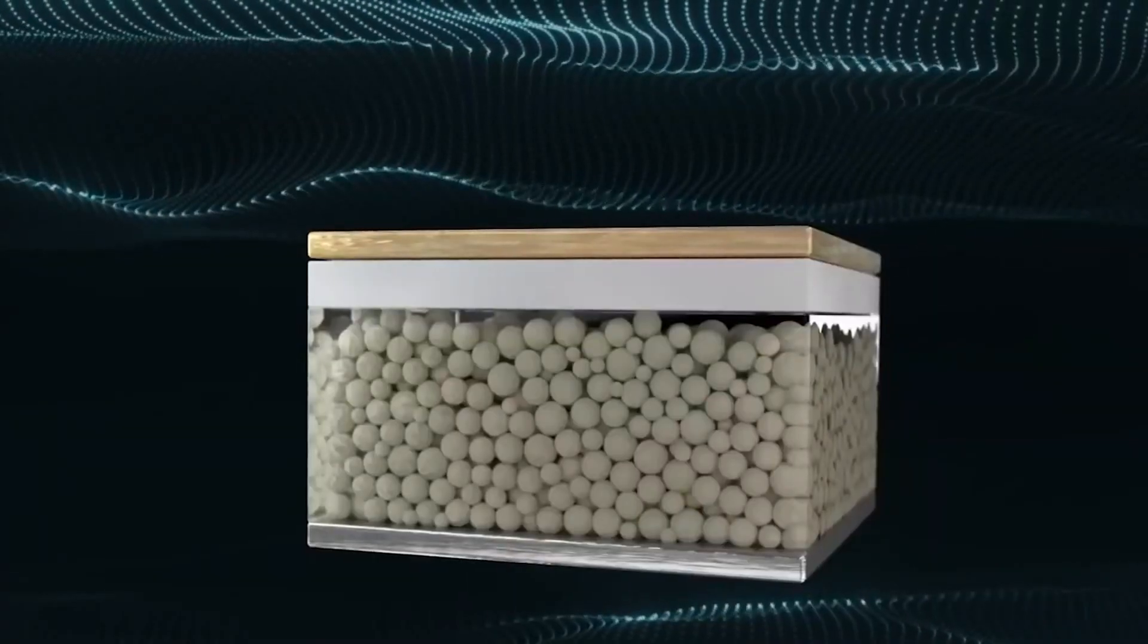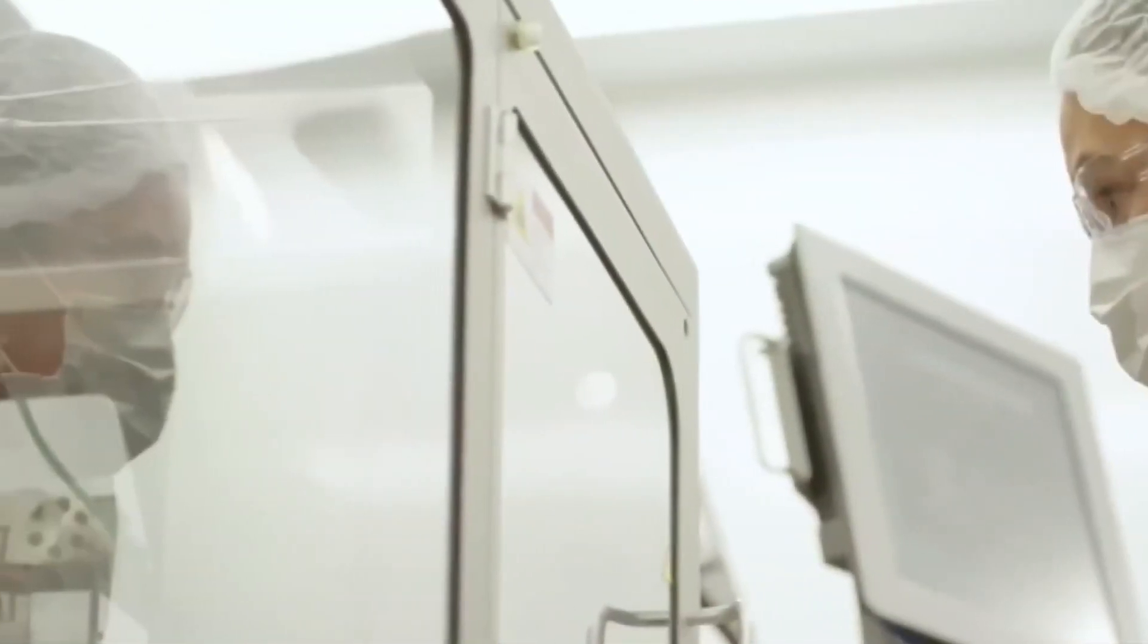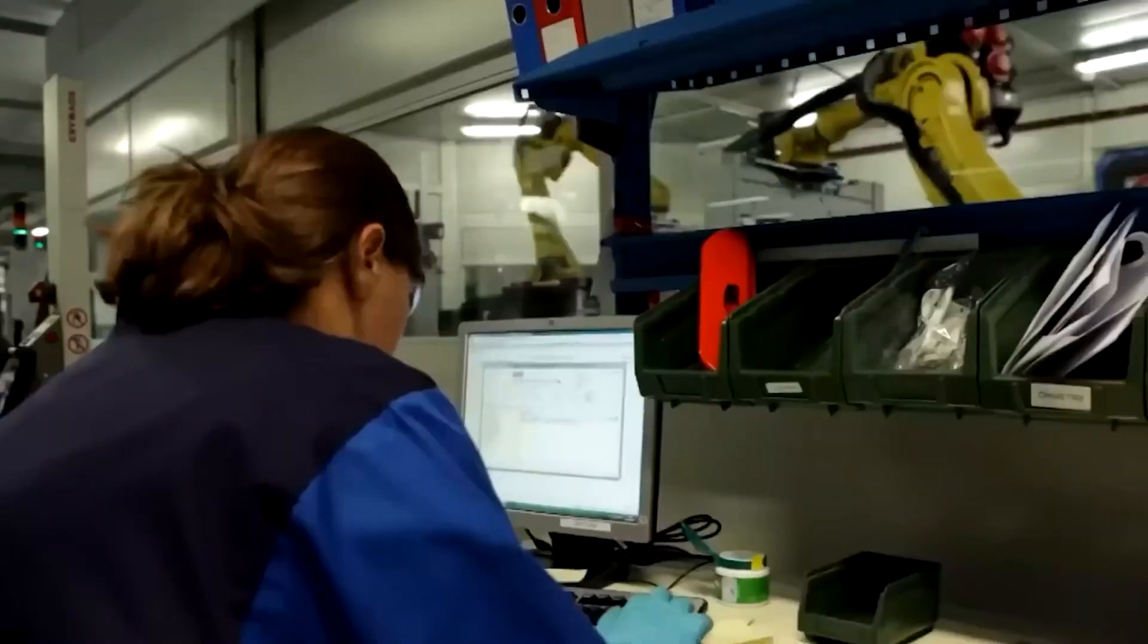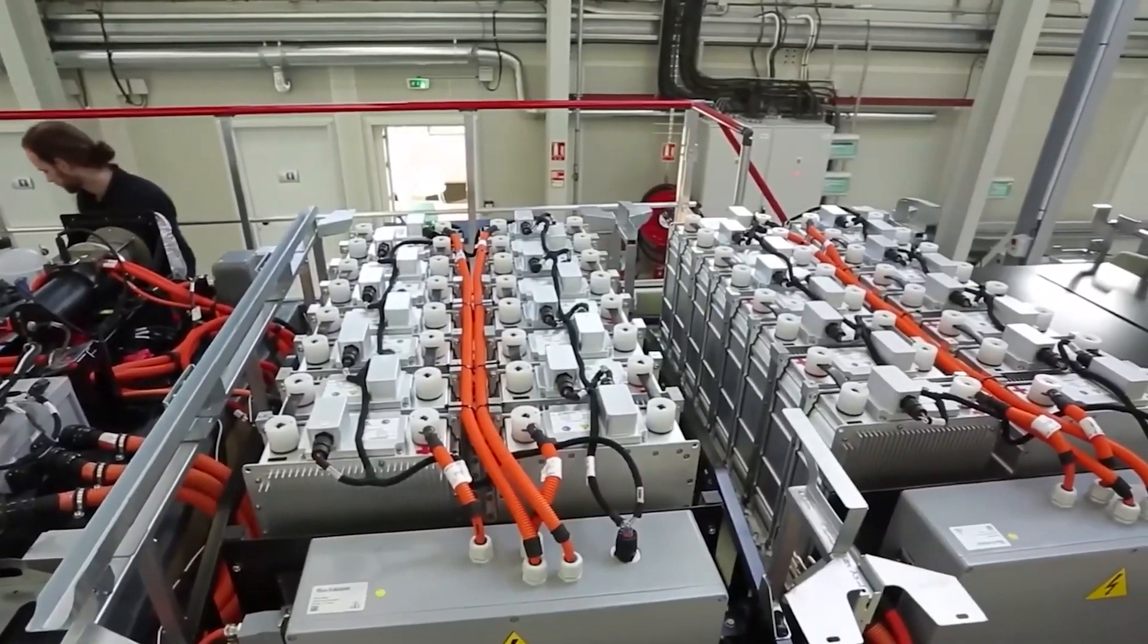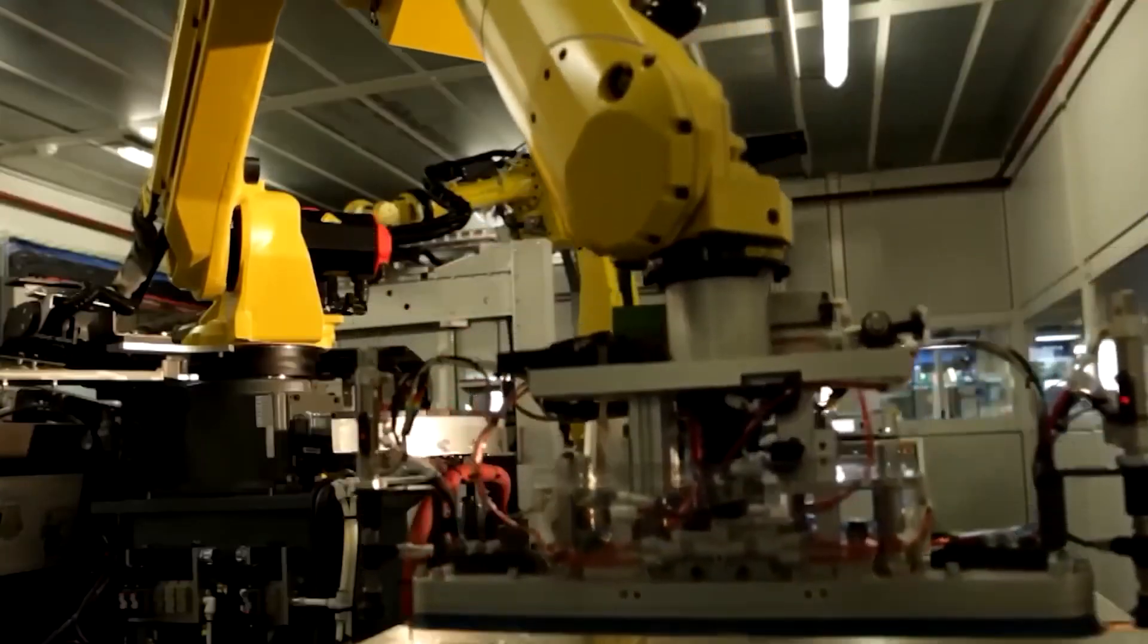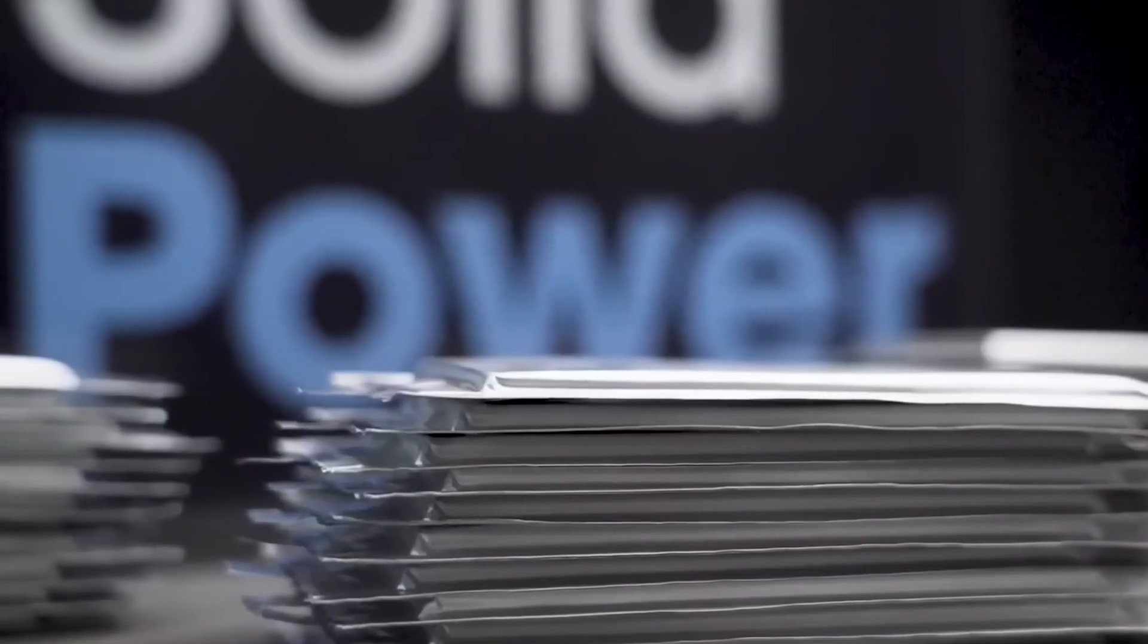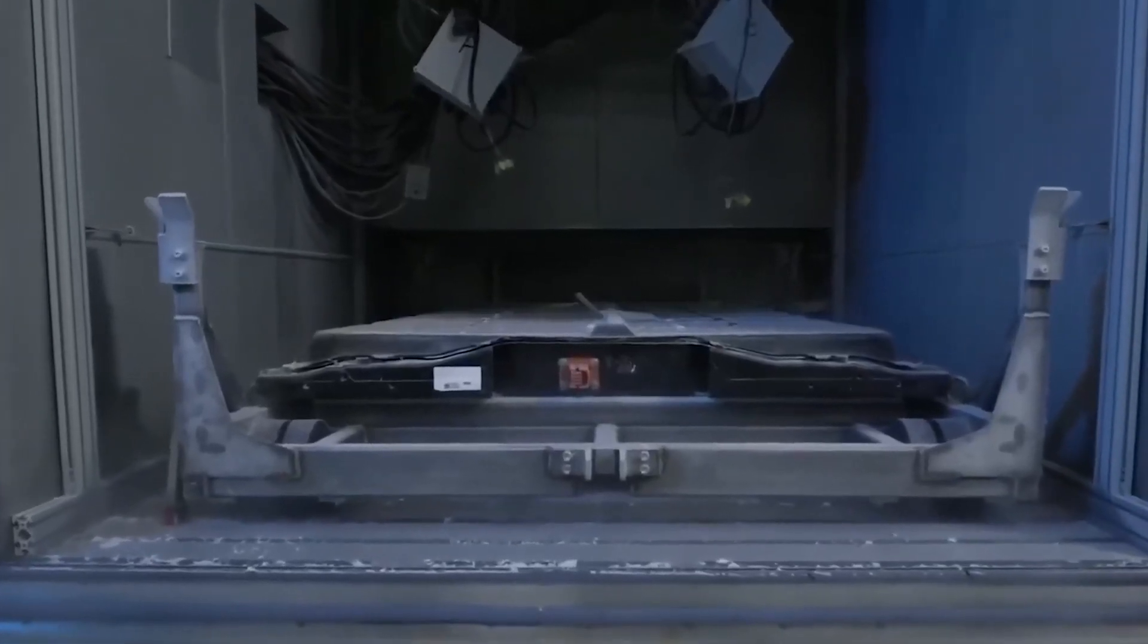It would be a game-changer for the automotive industry as a whole if Toyota is able to meet its internal deadline of starting mass production of these batteries in 2027. The Japanese automaker will gain an advantage in the development of EVs as a result. But Toyota isn't the only one advancing - their competitors are also part of the race for solid-state batteries.